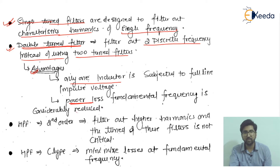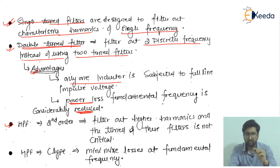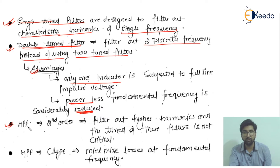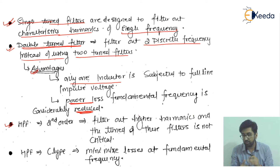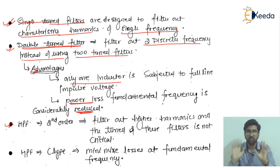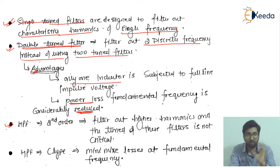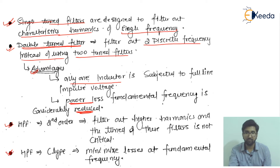The high-pass filter has two configurations: second order and C-type. The second order high-pass filter filters out higher harmonics above a cutoff frequency, removing unwanted frequencies from the system. An important characteristic is that the tuning of these filters is not critical.